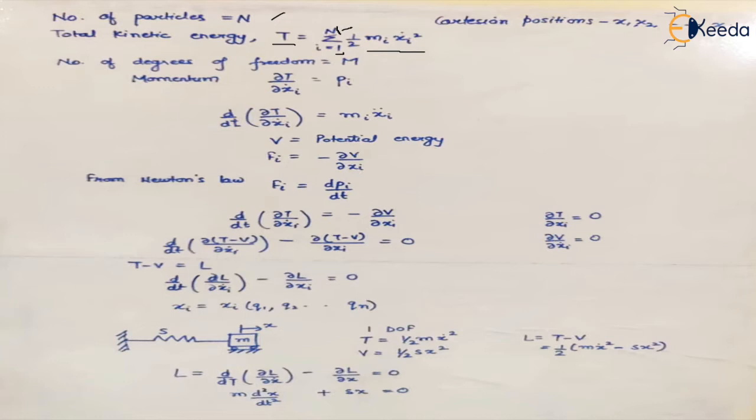where m is the number of degrees of freedom. The Cartesian positions are given by x1, x2 up to xi. If the system has only one degree of freedom, we use one Cartesian position x1 and m equals n. If the system is traveling in three dimensions, each particle requires three xi coordinates, so the degree of freedom m becomes 3n.